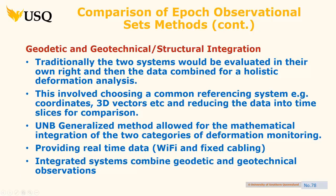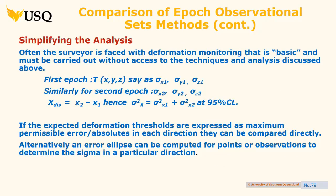In dams, you'll see a lot of fixed cabling because you don't want to drag it back out again. For direct measurement: for the first epoch you have sigma x1, sigma y1, sigma z1; for the second epoch, sigma x2, sigma y2, sigma z2. The displacement in X is x2 minus x1. You can see a very simple equation at 95% confidence — you know what you expect to get. What's outside that variance should be matched to the permissible error.